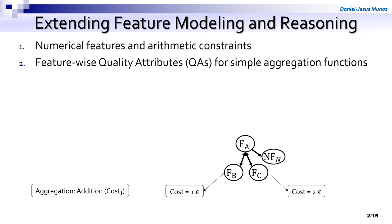Then we have the feature-wise quality attributes, which are only compatible with simple aggregation functions. For example, there we have the cost: one euro and two euros. The addition is the aggregation function for the cost — we just add the cost of the individual features that conform a final product.